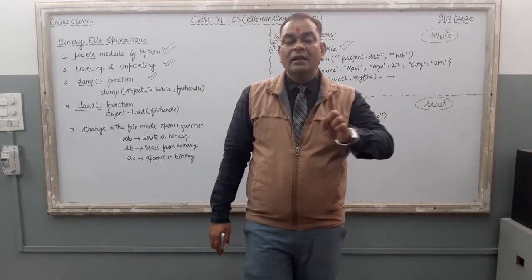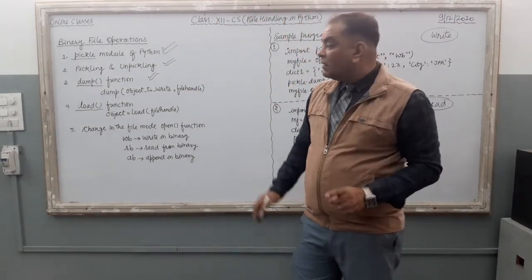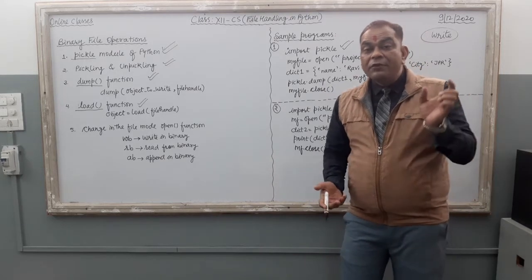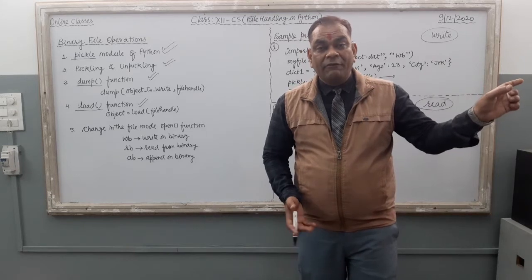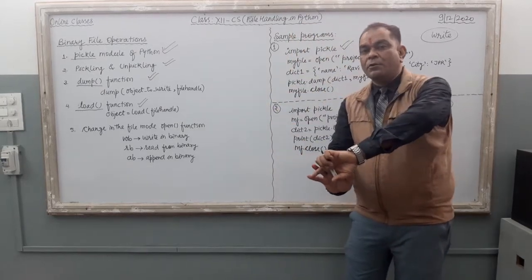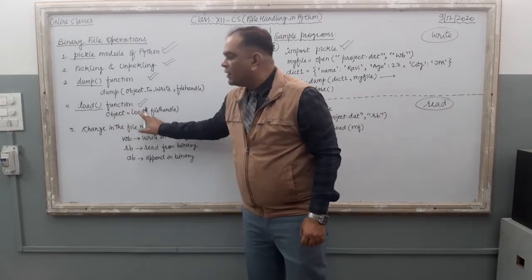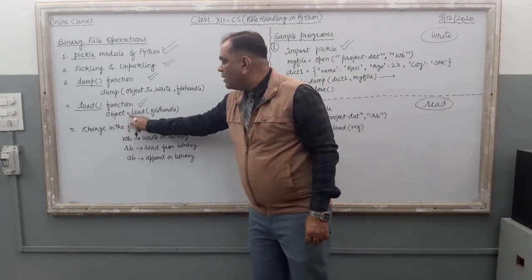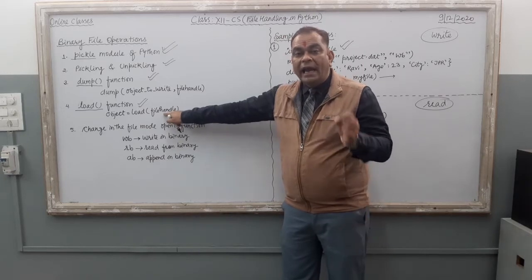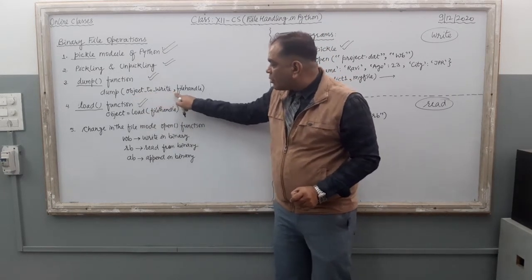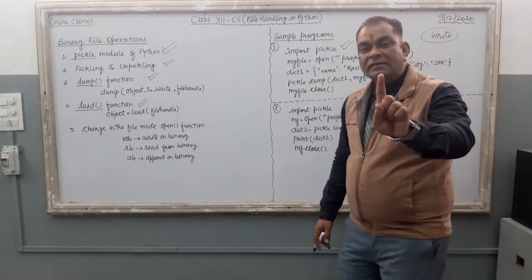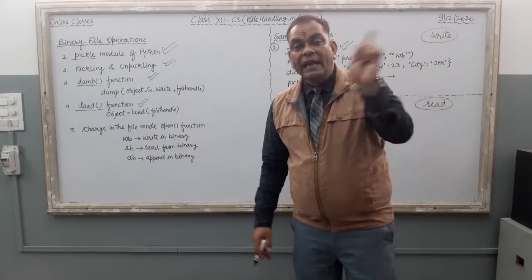The dump function is related with the write operation of the binary file. The load function is used for reading. The syntax is: object = pickle.load(file_handle). Inside the load function you write the file handle or file object name. Inside the dump function it is: object, file_handle. So — to write something in the file use dump; to read something from the file use load.